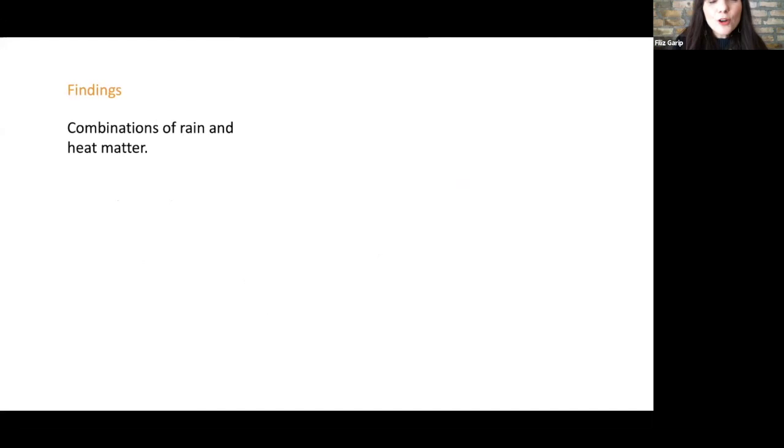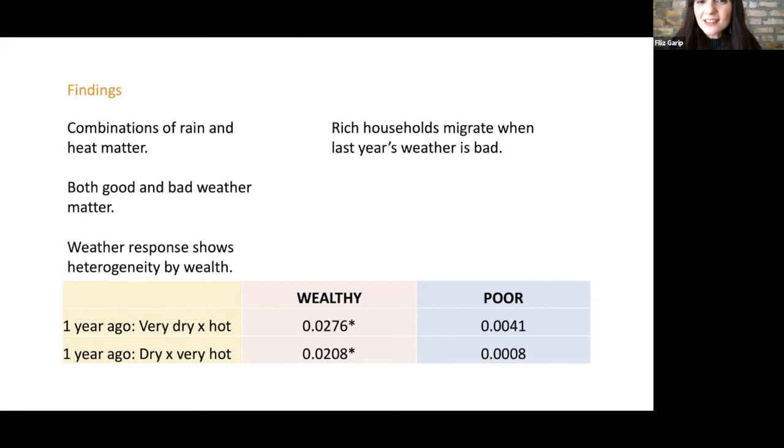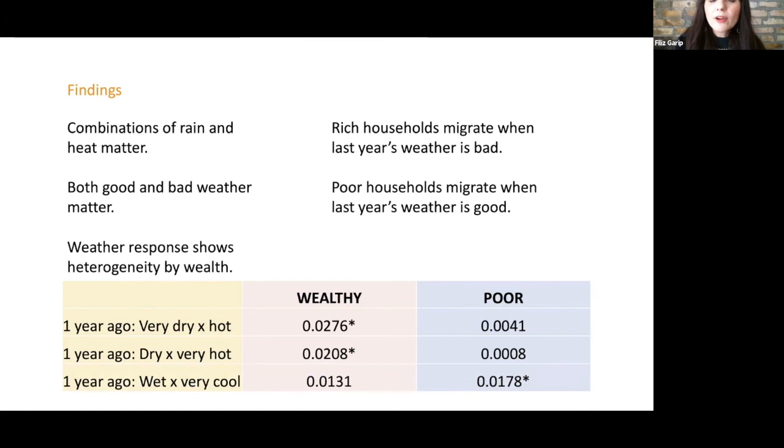What do we find? First, that farmer is absolutely right. Combinations of rain and heat matter. In other words, low rainfall by itself is not enough to induce migration. But when low rainfall is combined with extreme heat, that's when we see the migration response. We see that both good and bad weather matters in different ways. Good weather especially matters for poor families. We see a very strong heterogeneity by wealth in migration responses. Basically, rich households migrate when last year's weather is bad. This tells us that they can respond immediately. If you have a terrible season, you know that the next season, many wealthy families will be sending migrants to Mexico. Here we show some coefficients. When it's very dry and hot last year, or dry and very hot, we see positive coefficients for wealthy families, but no such coefficients for poor families.